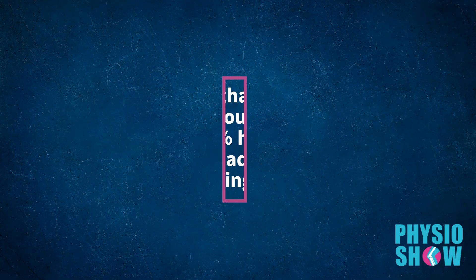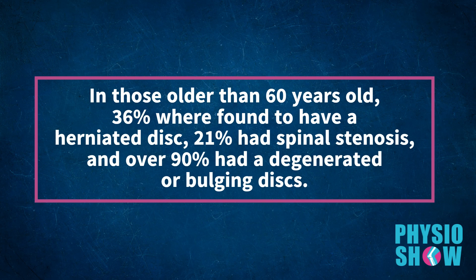There are numerous studies looking at groups of individuals without any episodes of low back pain, and they show high prevalences of degenerative changes. In those over the age of 60 years old, 36% were found to have a herniated disc, 21% had spinal stenosis, and over 90% had degenerative or bulging discs. So, regardless of clear findings of spinal degeneration, none of the individuals in these studies reported any episodes of low back pain.